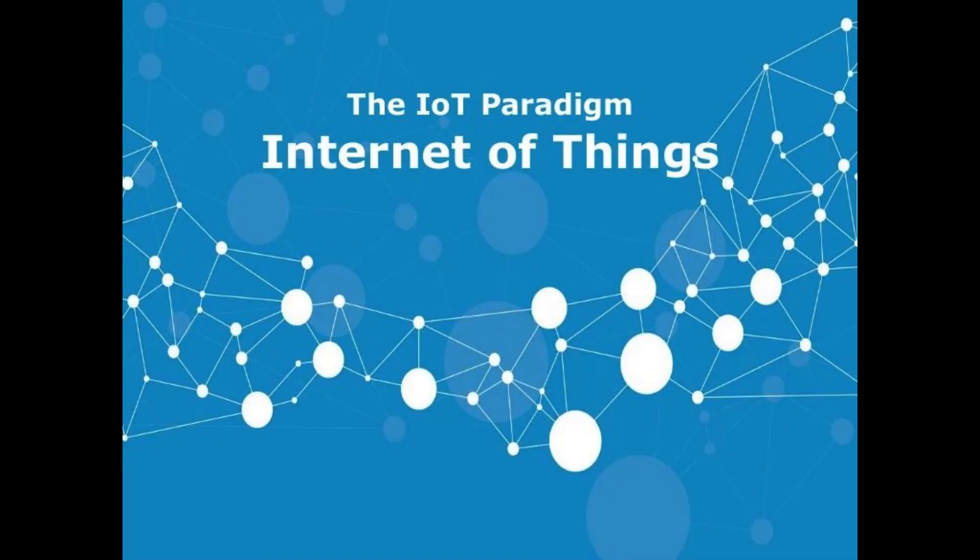The Internet of Things, IoT, paradigm refers to a system of devices interconnected with each other, equipped with computational capacity — smart objects — identifiable and enabled to transfer data over a network without required human interaction.